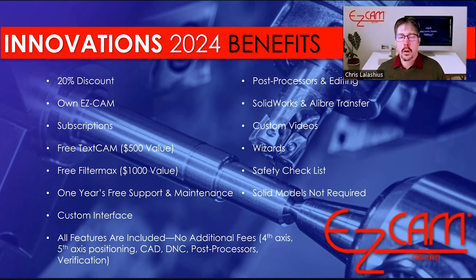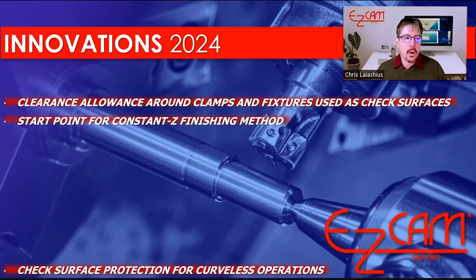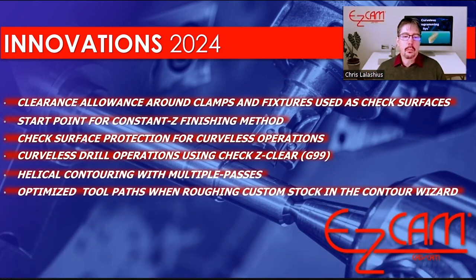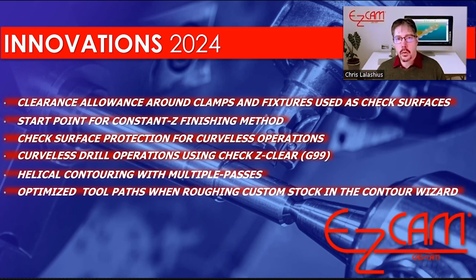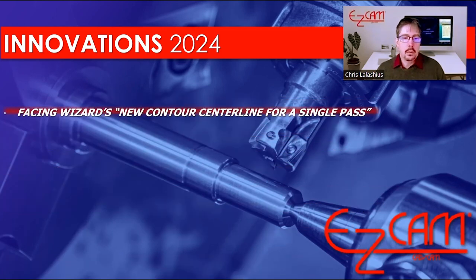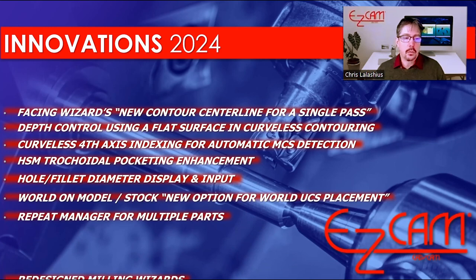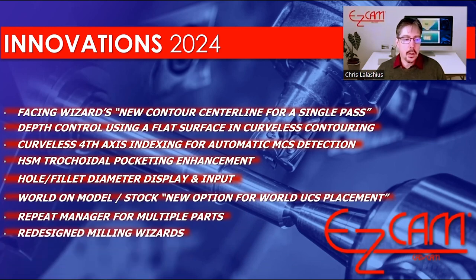Solid models are not required in EZCAM. You can use curves and geometry to create simple paths where you don't have to redesign your model. Some of the things we're going to talk about: clearance around clamps and fixtures, start points for Z-finishing, protection for check surfaces, drilling operations — whether you're machining to the rapid plane or the clearance plane — optimized toolpath around the stock, centerline passes for facing, depth control using a flat surface, high-speed machining, fillet and diameter display, world on stock, multiple parts, and our new wizards.